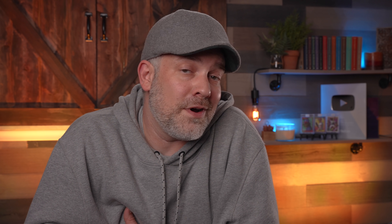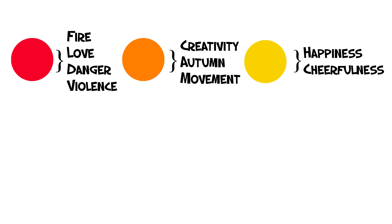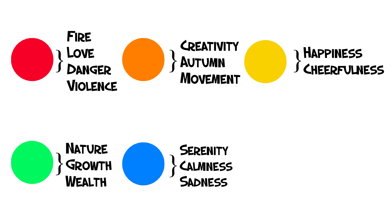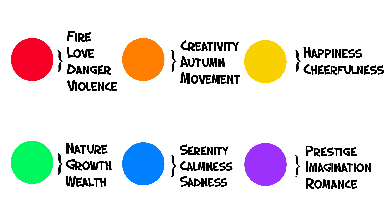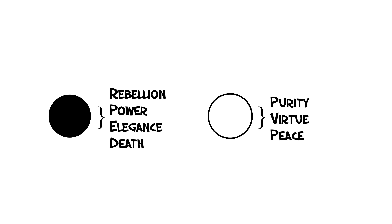Another important thing to think about when picking colors is the symbolism and emotions behind them. Certain colors make people think or feel different things, which you can use to your advantage as an artist. Red is associated with fire, love, danger, or violence. Orange can be associated with creativity, autumn, or movement. Yellow is associated with happiness or cheerfulness. Green can represent nature, growth, or wealth. Blue is associated with peace, calmness, or even sadness. Violet is associated with prestige, imagination, or romance. Neutral colors like black can mean rebellion, power, elegance, or death, while white is associated with purity, virtue, and peace.